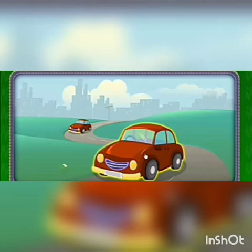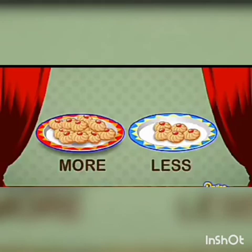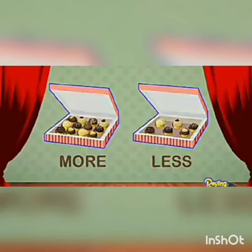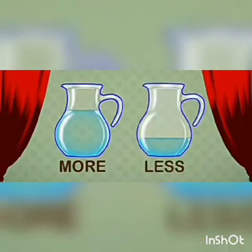Next is more or less. The plate which has more biscuits is more, and another plate has less biscuits. The sweet box on the left hand side is more, and the one on the right hand side has less sweets. Next example: there are two water jugs. The jug on the left hand side is more than the jug on the right hand side.